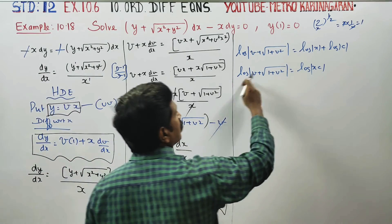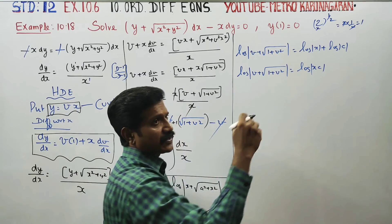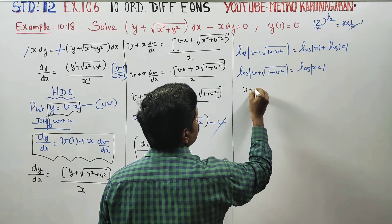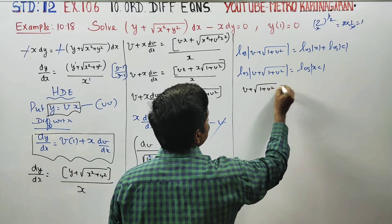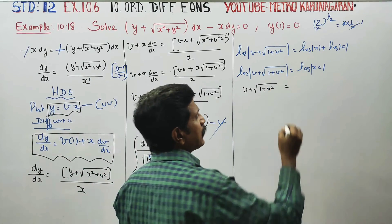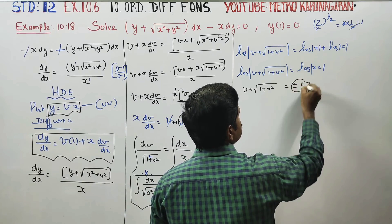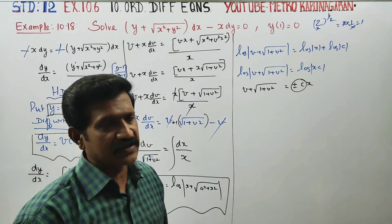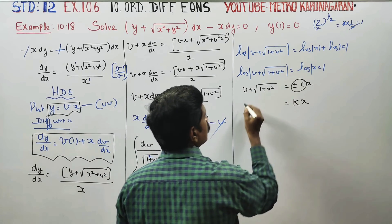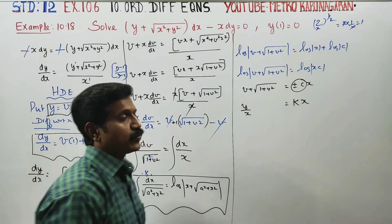Logarithm of v plus root of 1 plus v square equals log xc. Take anti-log on both sides — log cancels — giving v plus root of 1 plus v square equals plus or minus c into x, which is constant kx.